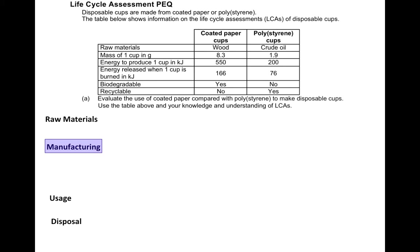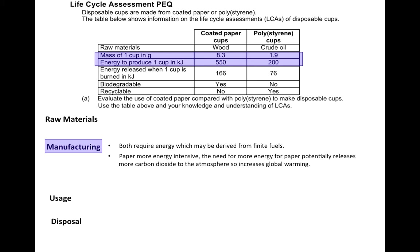For manufacture, there are two rows in the table that link directly to producing the cups: the mass of the cup and the energy used to produce it. It's important to state that producing both cups requires energy derived from fossil fuels. Producing the paper cup is more energy intensive — it takes 550 kilojoules compared to 200 kilojoules for the polystyrene cup. This higher energy need for paper potentially releases more carbon dioxide into the atmosphere, increasing global warming.